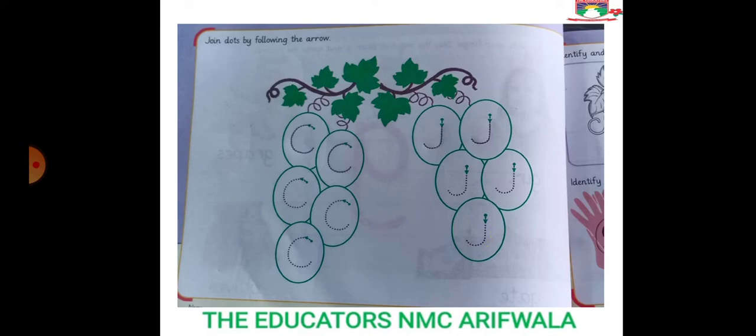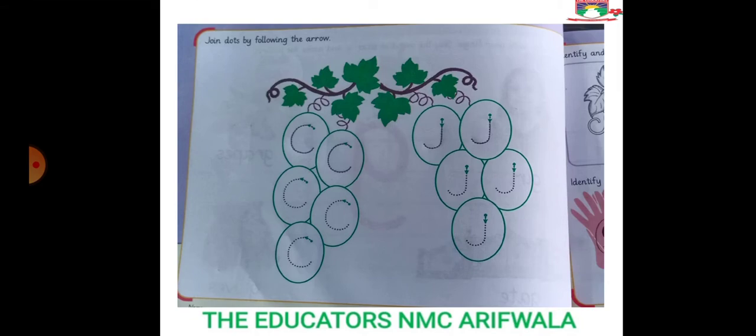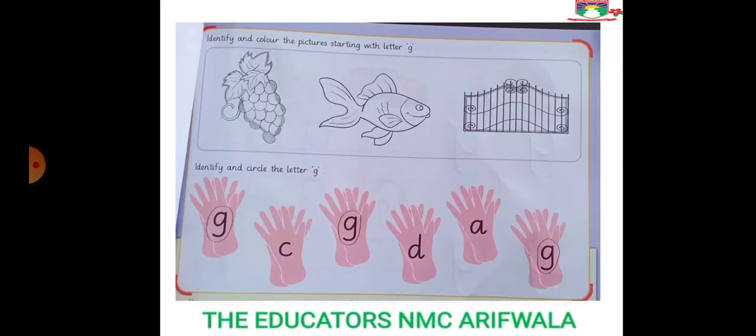Okay students, our classwork is done. This is your homework: page number 27 and 28. Identify and color the pictures starting with letter G.